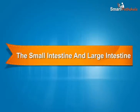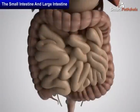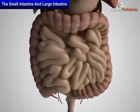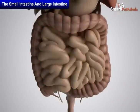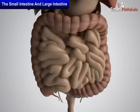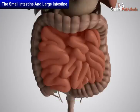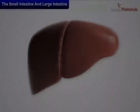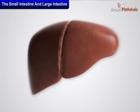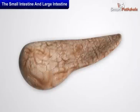In this module, let us learn about the process of digestion in the small intestine and large intestine. The small intestine is highly coiled and is about 7.5 meters in length. The walls of the small intestine secrete juices. It also receives secretions from the liver and the pancreas.